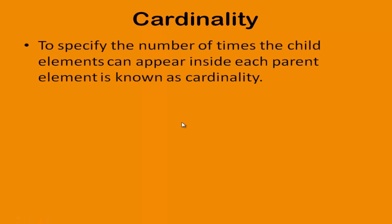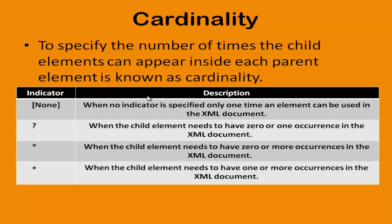The next topic is cardinality. Cardinality is how many number of elements can be specified inside a particular parent element. In our earlier case we could specify one or more elements, but we didn't mention how many times a particular child element can repeat inside a parent element. To specify the repetition of child elements inside a parent element, we use the concept of cardinality, using cardinality indicators.